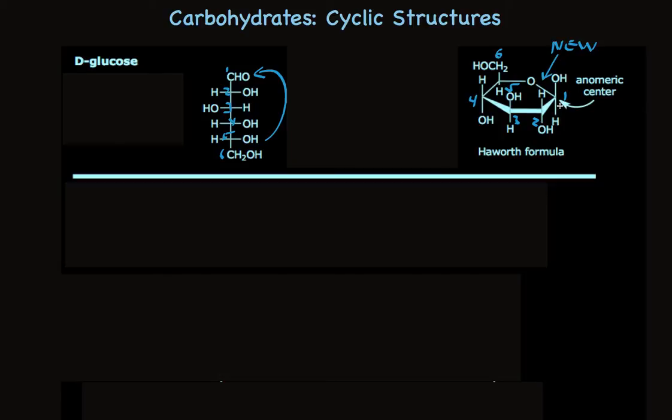Carbon 1 is called an anomeric center because it makes two anomers. And when these anomers are formed, one of them will have the hydroxy group up, and the other one has the hydroxy group down. I've shown the one with the hydroxy group up, and it's called beta. And if the hydroxy group is down, it's designated as alpha.